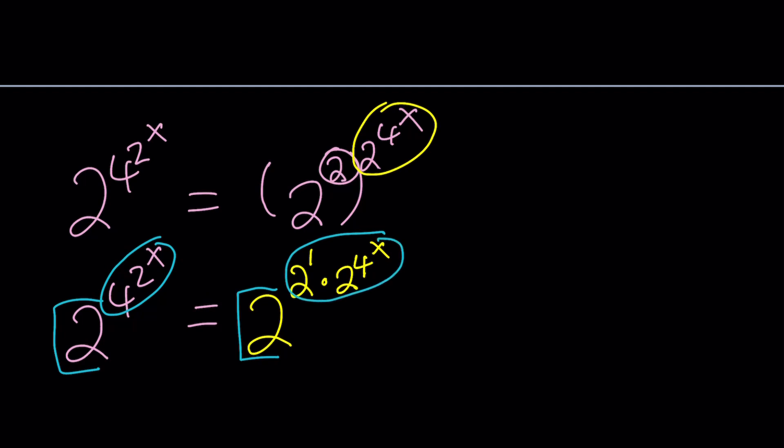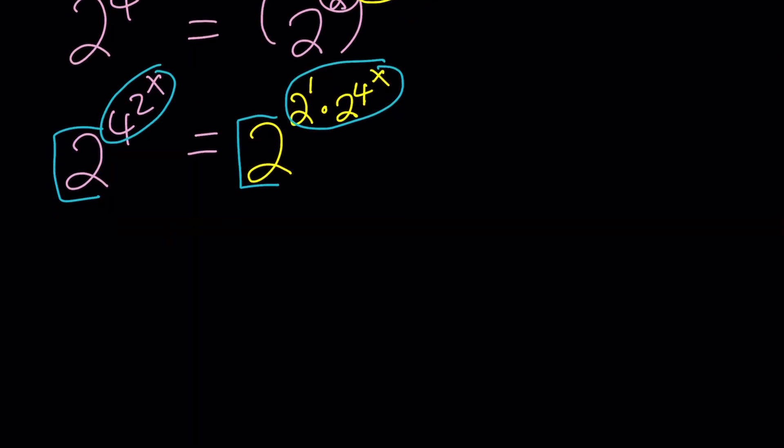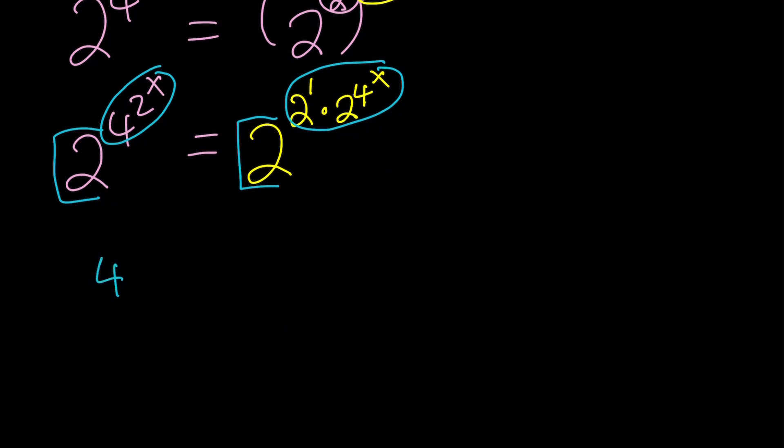So it becomes 2 to the power 2 times 2 to the power 4 to the power X. And then since this 2 is just 2, we can write it as 2 to the first power. Now notice that the bases are the same, so we can go ahead and just focus on the exponents. Forget about the bases and set the exponents equal to each other. When we do, we're going to get 4 to the power 2 to the power X equals 2 to the power—now when you multiply two powers or exponentials at the same base, you add the exponents—so it's going to be 1 plus 4 to the power X.